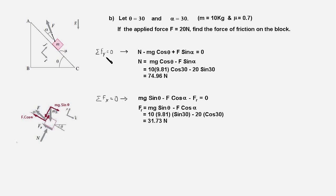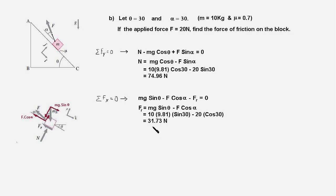Writing the equilibrium equations: the sum of forces in the y-direction equals zero, similar to the previous example, and this gives us the normal force equal to 74.96 newtons. The second equation — sum of forces in the x-direction equals zero — has the frictional force as the unknown, since the applied force is known. Solving this equation, the frictional force turns out to be 31.73 newtons. Since this answer is positive, our assumption that friction acts up the plane is correct.